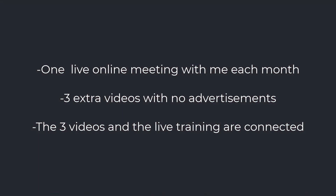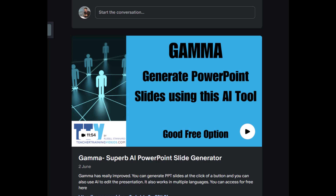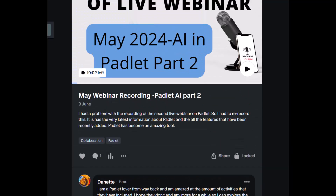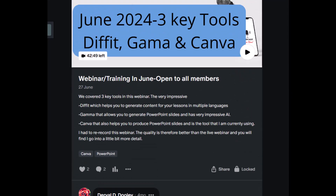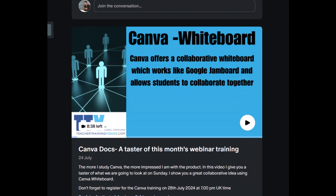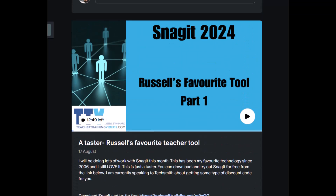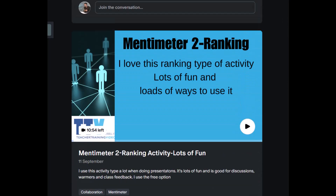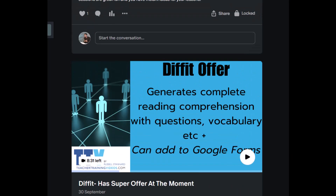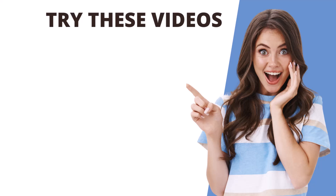If you'd like live training with me, think about joining me on Patreon. For six dollars a month you get three ad-free videos each month connected to a monthly live webinar where we work with the featured technology and do activities to really learn to use it well. You also get access to all backdated material — over a year of videos and live training. It's very practical with lots of ideas for class or online teaching. You get all of that for six dollars a month.